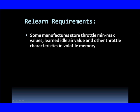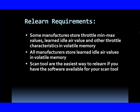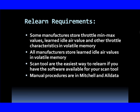Some manufacturers store minimum and maximum values in their throttles and learn idle air and other throttle characteristics in memory, requiring that we relearn some things when changes happen. All manufacturers store learned air values in volatile memory — so it knows what it needs to idle tomorrow morning when you start your car at 30 degrees outside. The scan tool is the easiest way to relearn if you have the software available, though many scan tools currently need to be factory scan tools to perform the relearn process.